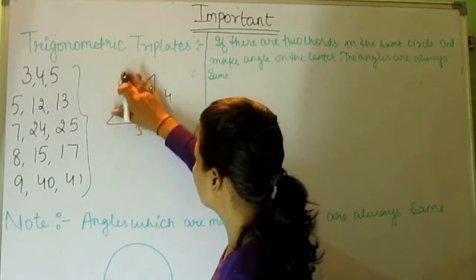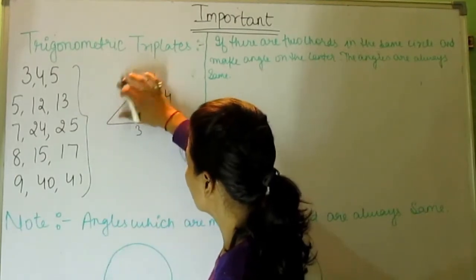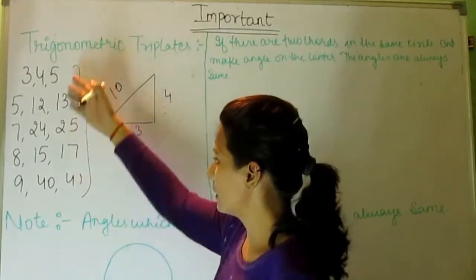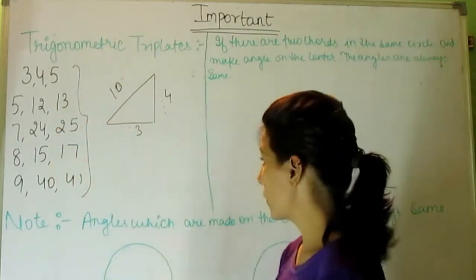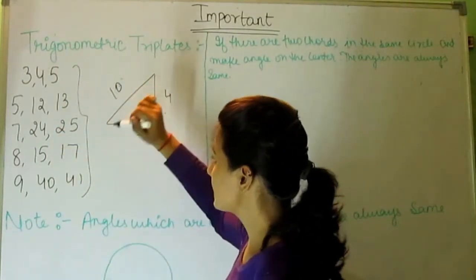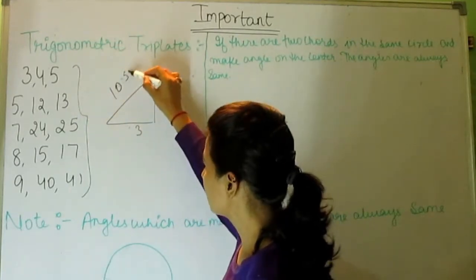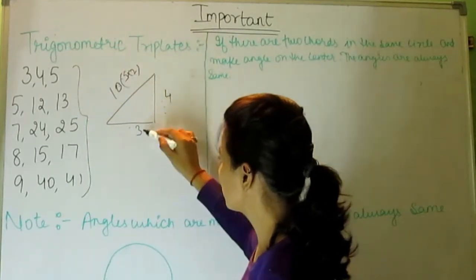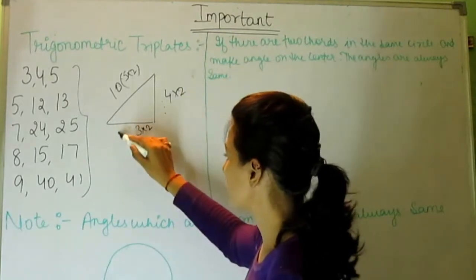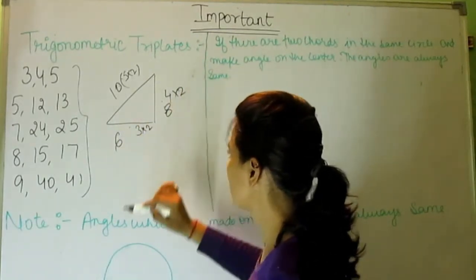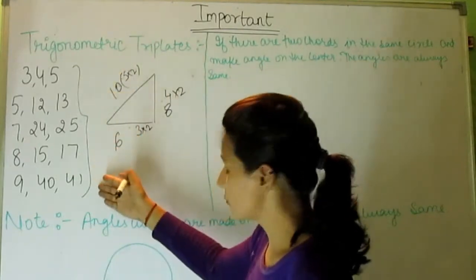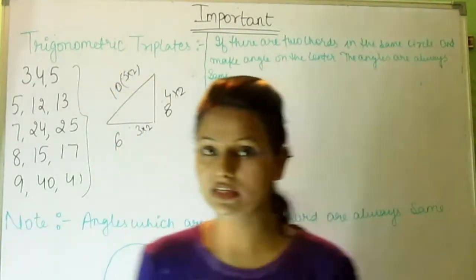Let's suppose we have been given ten here. Now ten is not directly listed, but ten is double of five. So both sides will be doubled — the length will be six and the length will be eight. Just learn these triplets and questions will be solved easily.